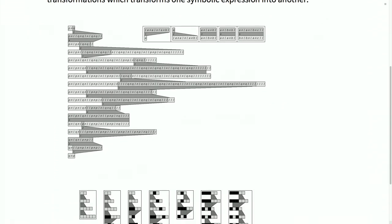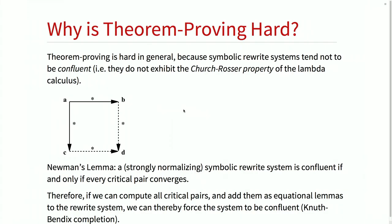Here are some examples from NKS: a proof of commutativity of the NAND operator, given axioms defining symbolic transformation rules, showing where each rule gets applied. Here's an ultimately abstract form of the same idea — given a very abstract symbolic representation of three axioms, here are proofs of seven abstract theorems where each symbolic expression is just a sequence of black and white boxes.